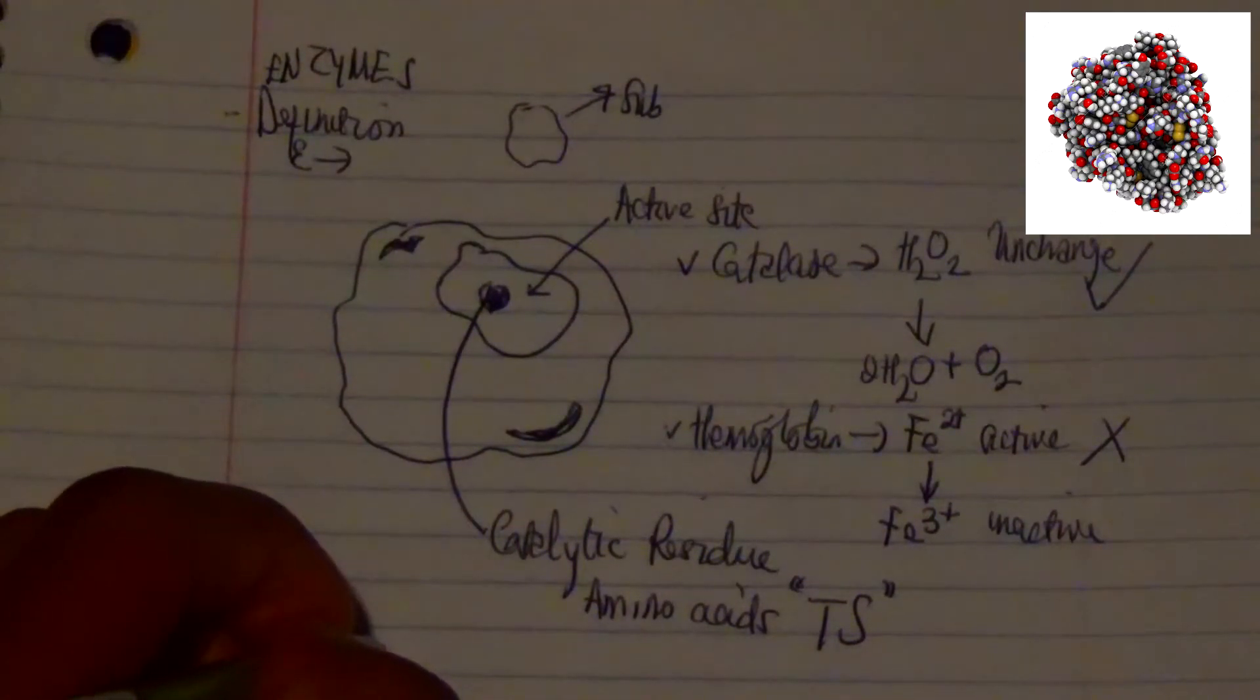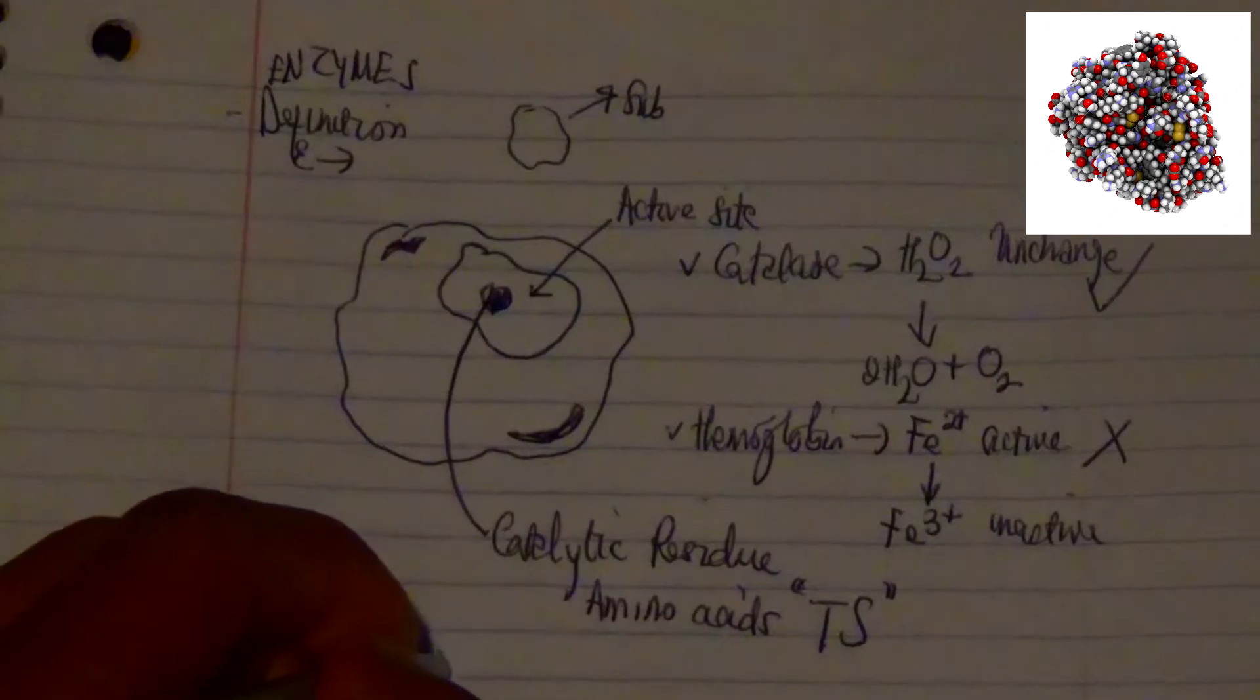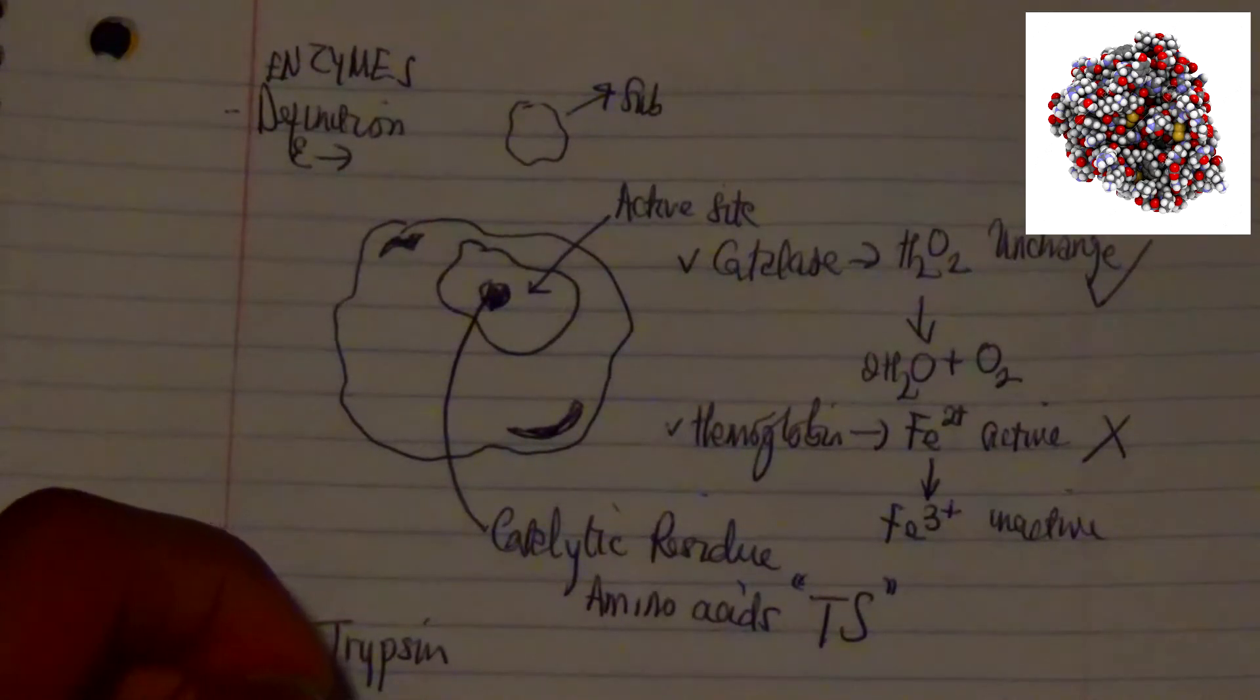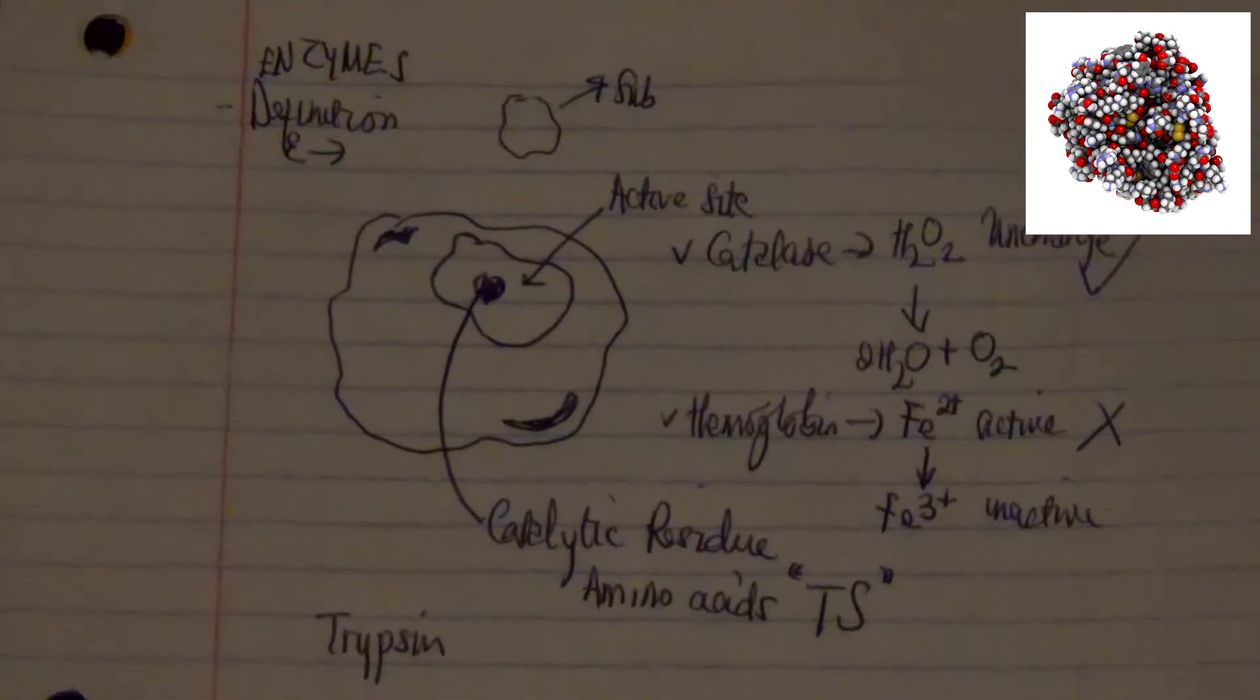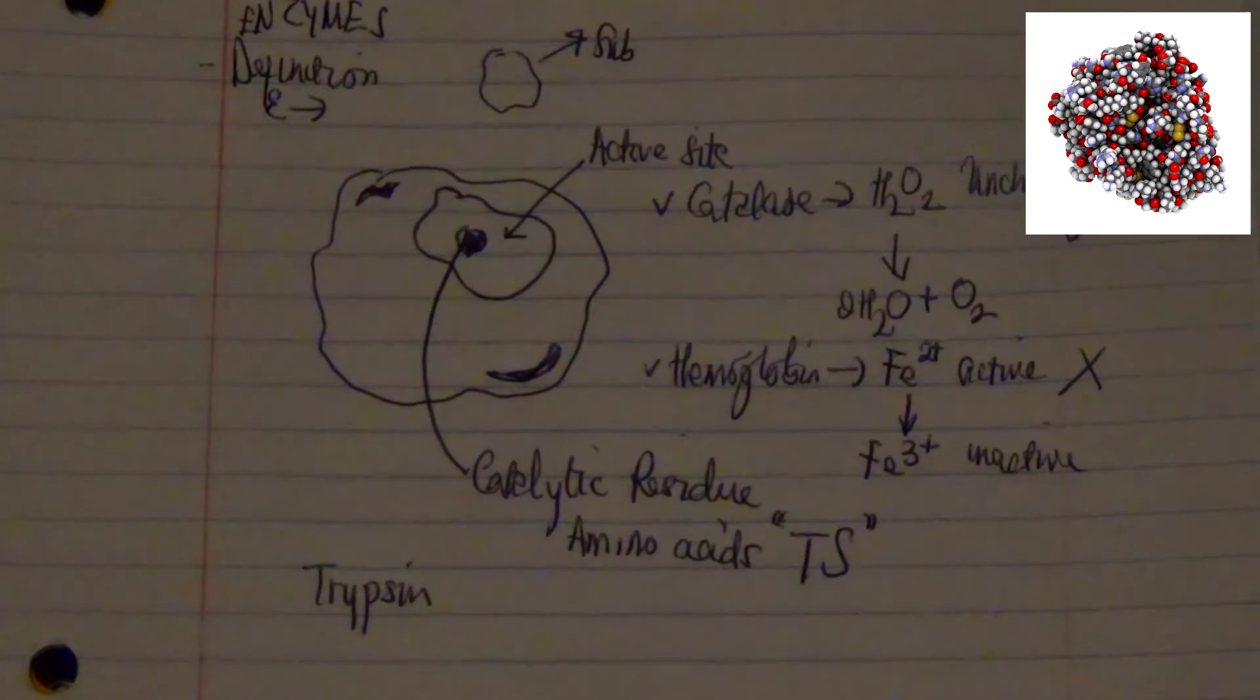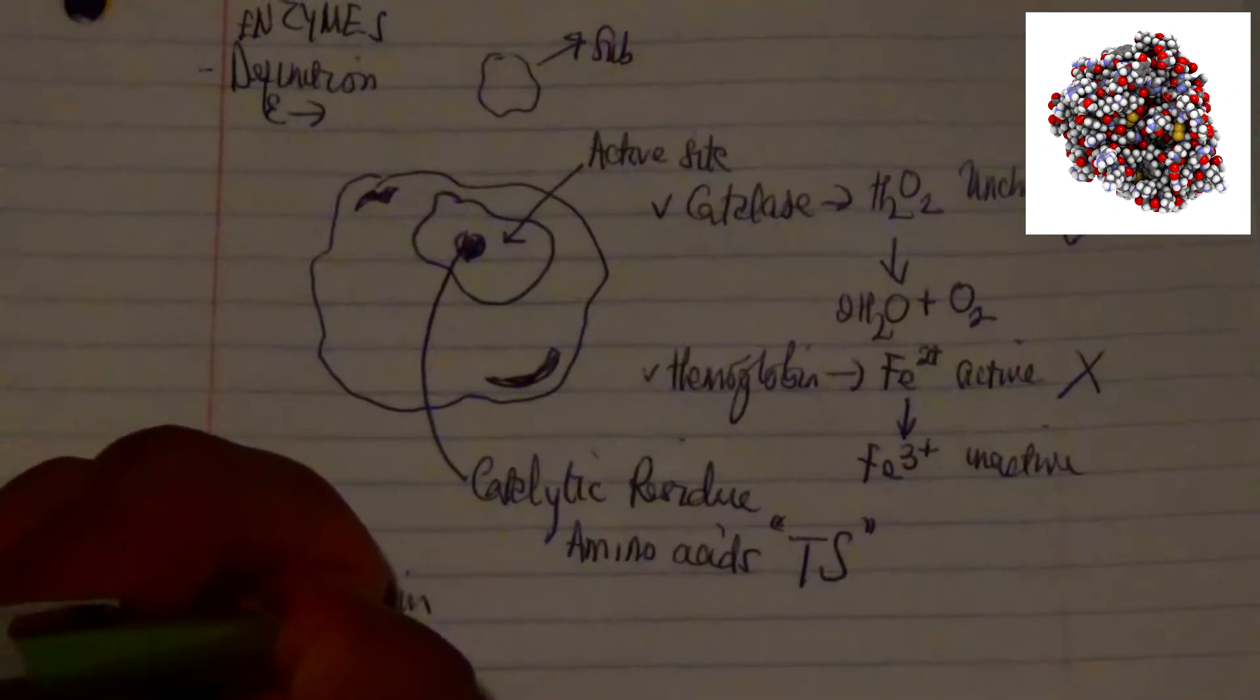For example, trypsin is really known to be a protein catalyst in a way because it's able to actually split or break proteins into various amino acids, or polypeptides into amino acids, by hydrolyzing the peptide bond in proteins.